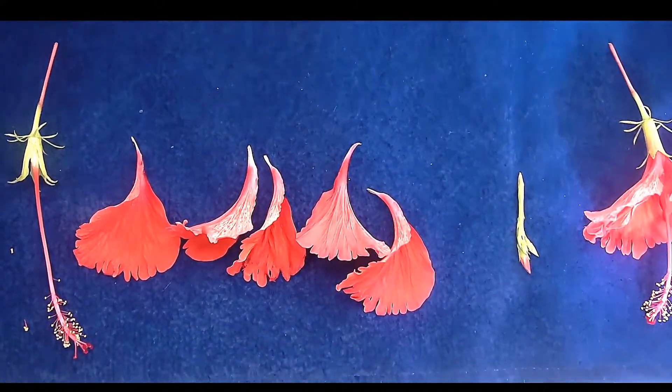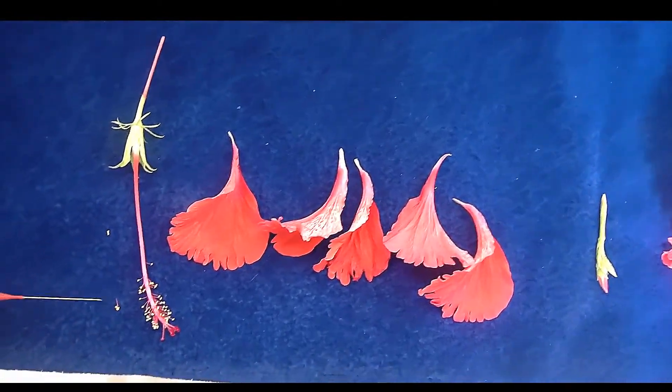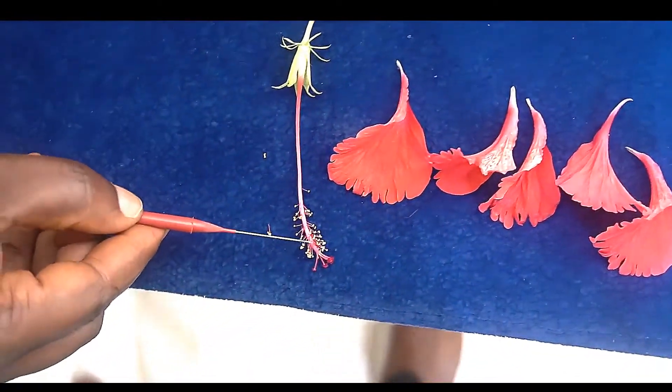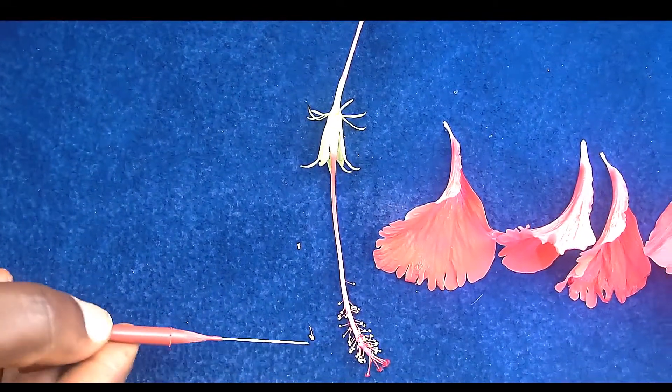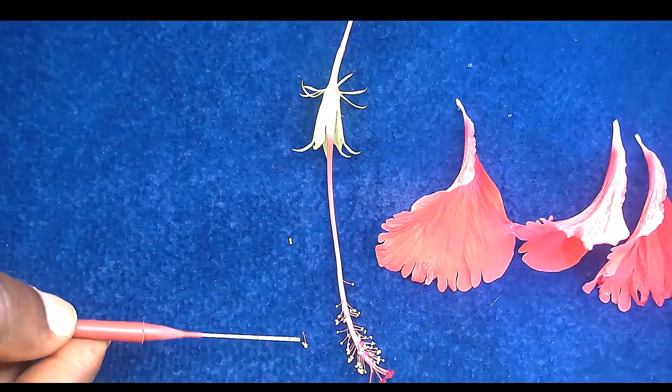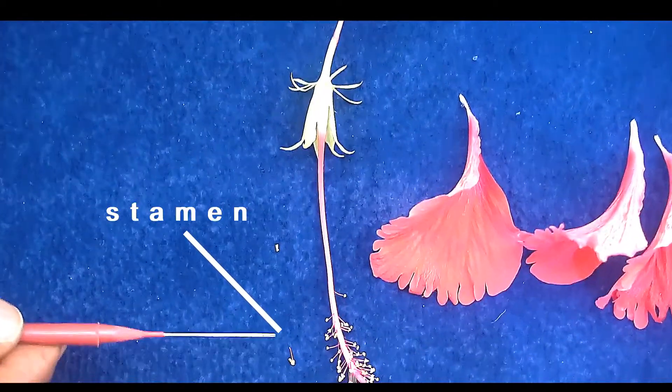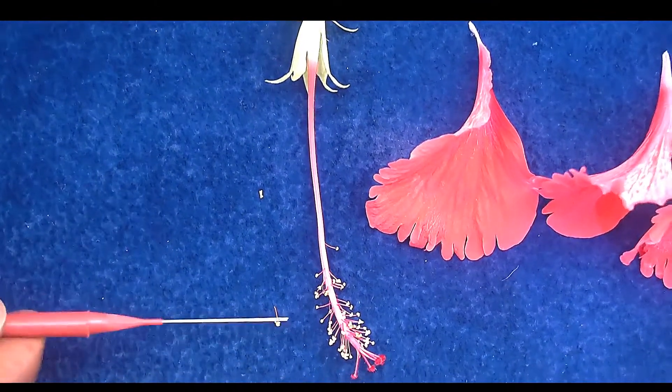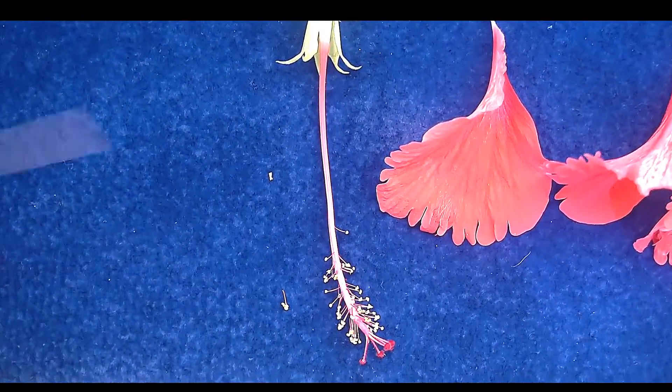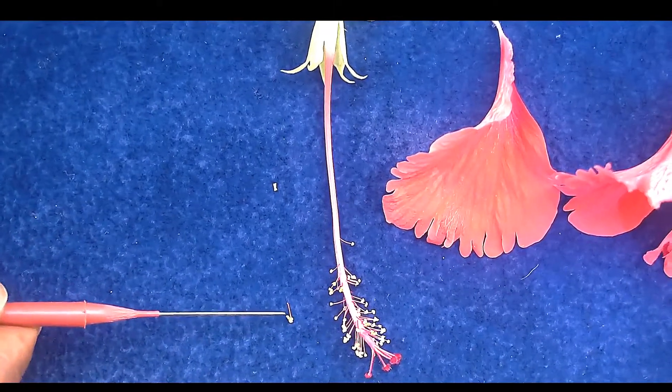Now, this part of the flower, this, can you see this? I've removed one out of it. You can see this one here. We call that the stamen. This stamen is from the Latin word thread. You can see that it actually looks like a thread.